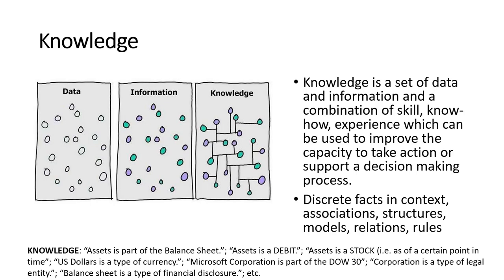Knowledge takes this a step further. You see those little lines between the little data points. The data picture shows just little circles representing pieces of information. The information picture shows different colored circles indicating some sort of categorization or correlation. Adding those little lines represents providing associations between the pieces of information — structures, models, relations, rules. That's how you get knowledge.